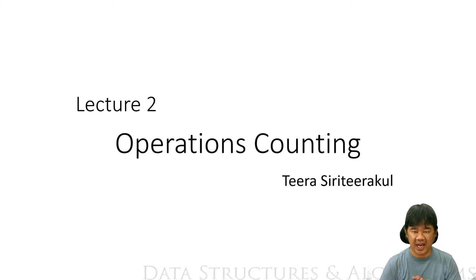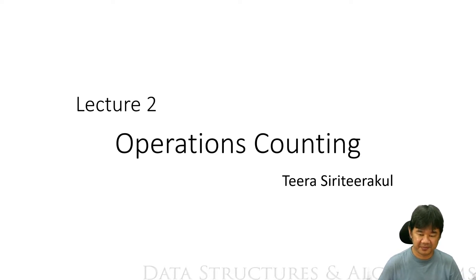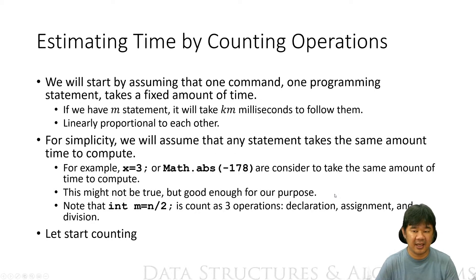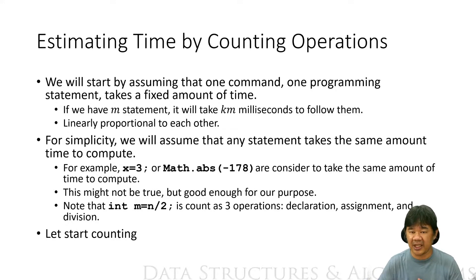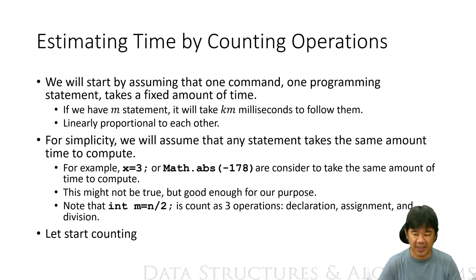Before we go to asymptotic analysis, we're going to start counting operations in our program or algorithm. We're going to estimate time by counting the number of operations in our algorithm. We assume that one command or one programming statement takes a fixed amount of time, so a thousand of them takes a thousand times longer. For simplicity, we assume any statement takes the same amount of time — so 'x = true' and 'Math.abs(-178)' are considered to take the same amount of time. It's not strictly true, but it's good enough for our purpose.